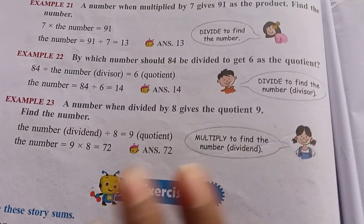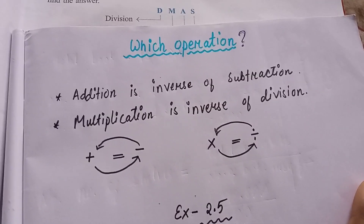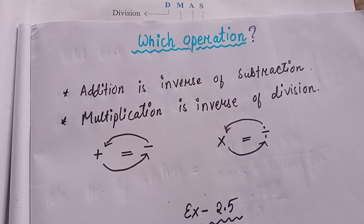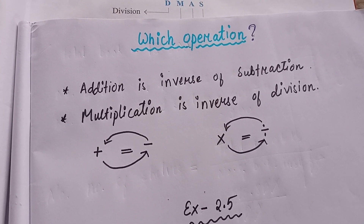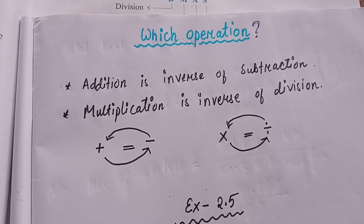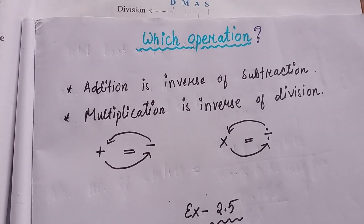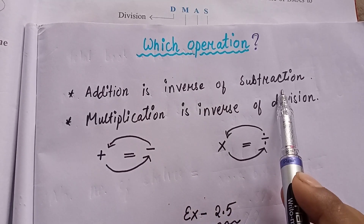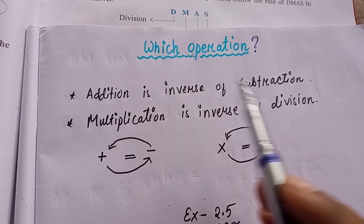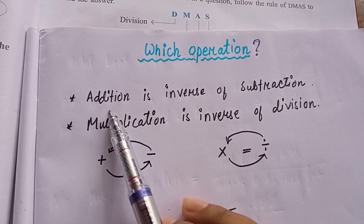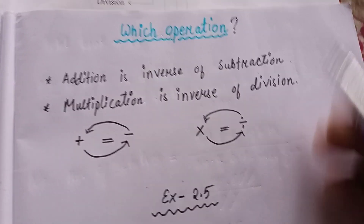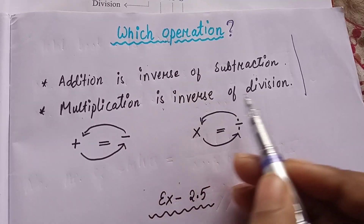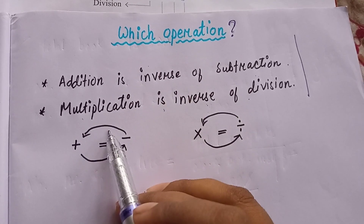Out of the four operations, two operations are inverse of each other — that means opposite of each other. For example, addition is inverse of subtraction, and subtraction is opposite of addition. Similarly, multiplication is inverse of division and division is inverse of multiplication.